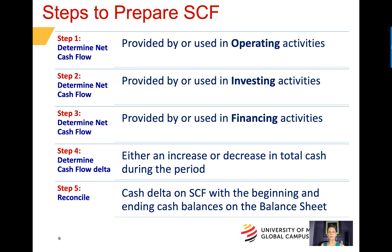One way to remember the order in which the statement of cash flows is prepared is that the sections are prepared in the opposite of alphabetical order. O for operating is the last letter alphabetically, but it comes first in the statement. I for investing is the middle letter, and F for financing is the first letter alphabetically, so it's the opposite of alphabetical order.